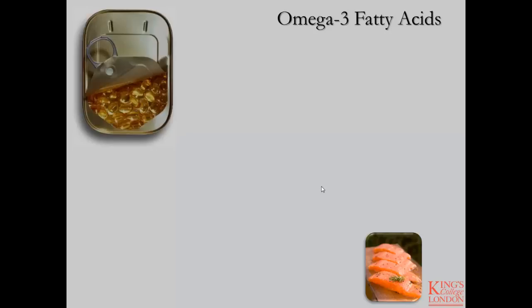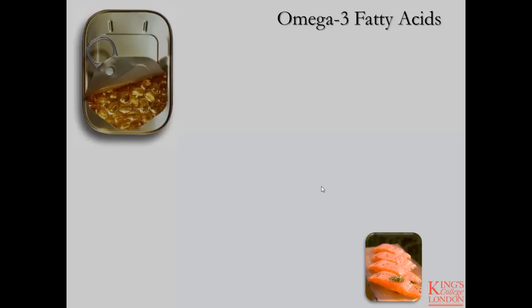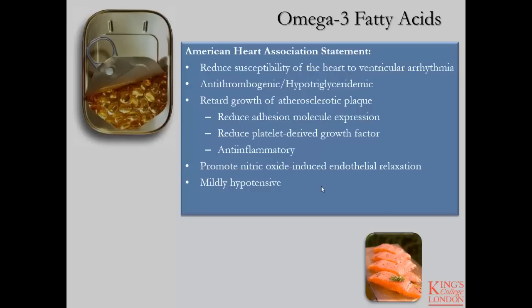A separate note on omega-3 fatty acids: we have two different types. We have those from plant sources and those from animal sources, primarily fish. The long-chain polyunsaturated omega-3s in fish are EPA and DHA, and the most common plant-based omega-3 fatty acid is alpha-linolenic acid. They are very different and come from very different parts of our diet. Therefore, consuming one does not necessarily mean you are sufficient in all omega-3 fatty acids, and they are of nutritional importance because several well-respected scientific bodies have made general health position statements regarding their health effects.